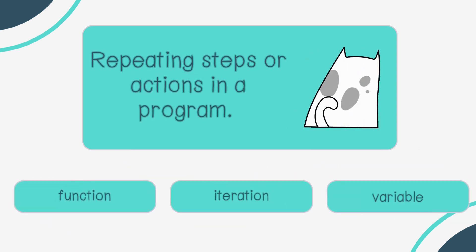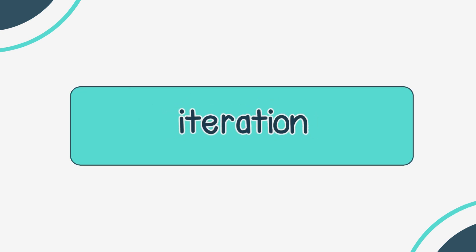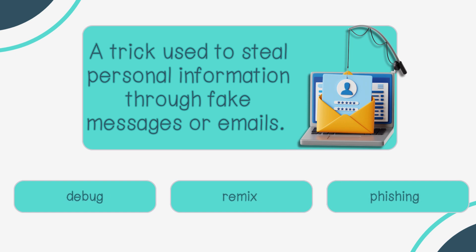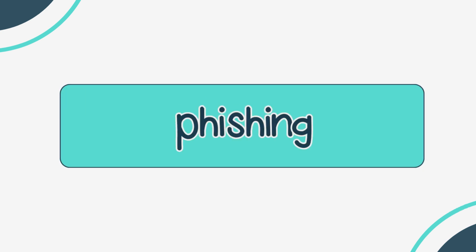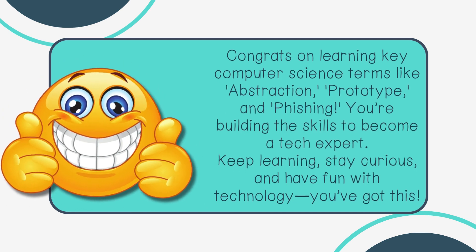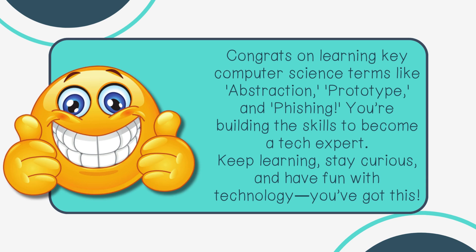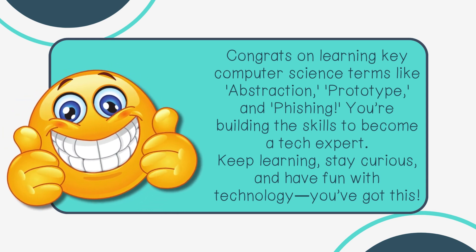Repeating steps or actions in a program — function, iteration, or variable? Iteration. A trick used to steal personal information through fake messages or emails — debug, remix, or phishing? Phishing. Congrats on learning key computer science terms like abstraction, prototype, and phishing. You're building the skills to become a tech expert. Keep learning, stay curious, and have fun with technology — you've got this!